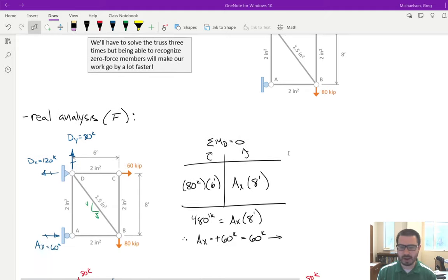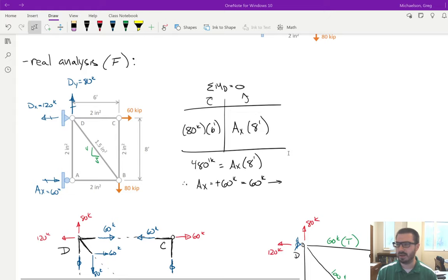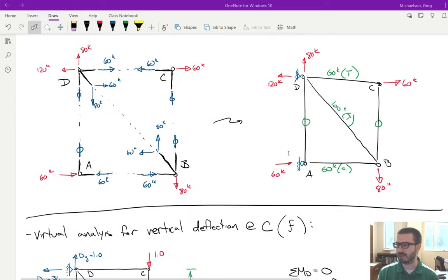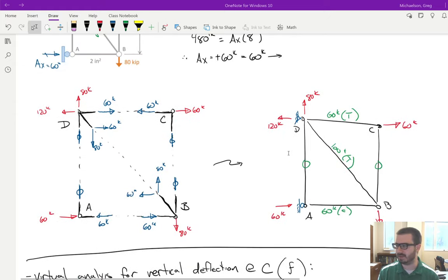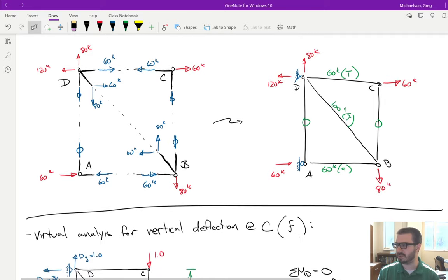We had done our real analysis, computing the reactions, and then we did our joint analysis. We sort of did it in one fell swoop, drawing that exploded view of the truss and doing our method of joints analysis, and it ended up going very quickly.